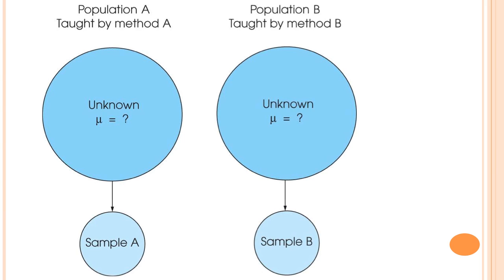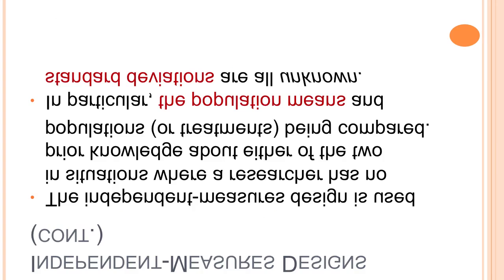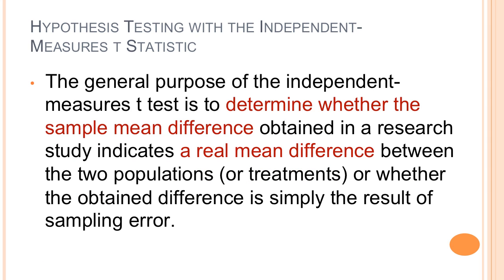For example, you have population A taught by method A — you don't know the population mean, but you take a sample and calculate the sample mean. Then you have population B taught by method B, and you get a sample mean for method B. The independent measures design is used when a researcher has no prior knowledge about either of the two populations or treatments being compared — the population means and standard deviations are unknown. The general purpose is to determine whether the sample mean difference indicates a real mean difference between the two populations, or whether it is simply the result of sampling error.